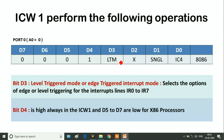Bit D3 represents whether the interrupt is a level-triggered or edge-triggered interrupt. D3 selects the options of edge or level triggering for interrupt lines IR0 to IR7. Bit D4 is always high for ICW1 because A0 equals 0 and D4 equals 1, so it can be interpreted as an ICW1 command word. Bits D5, D6, and D7 are always logic 0 for the 8086 microprocessor.